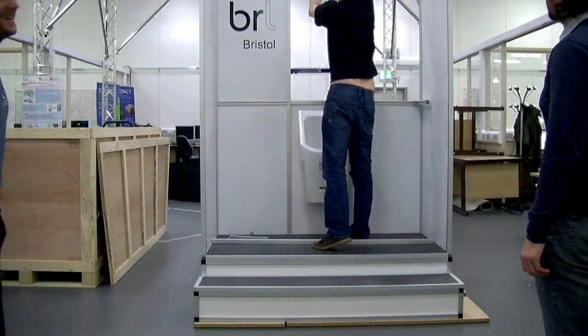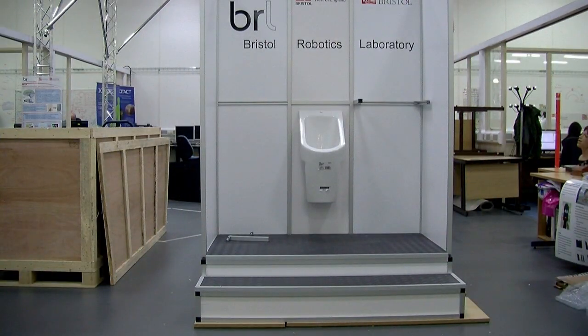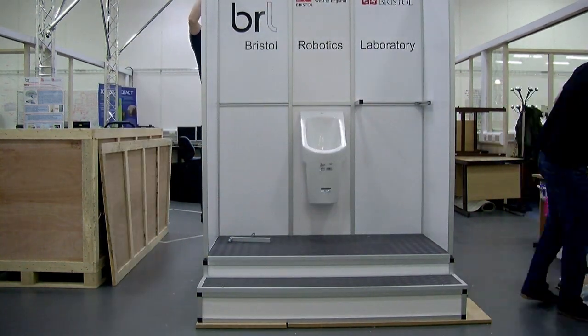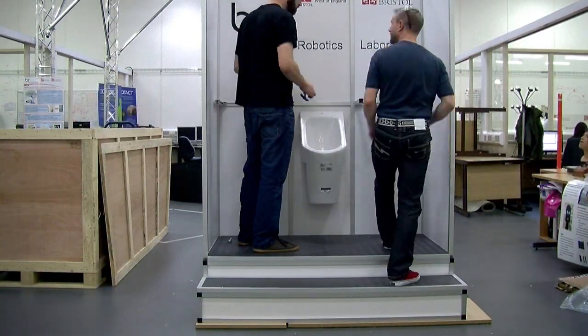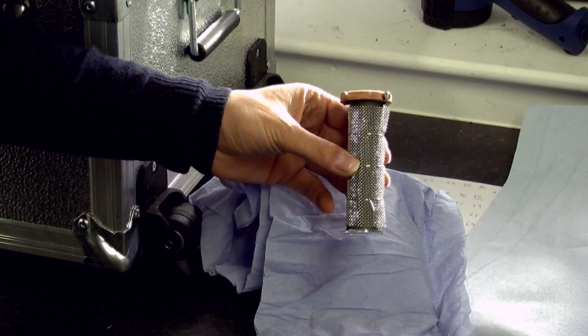The toilet enclosure that we're taking consists of a freestanding urinal which has been donated by one of our partners through the Gates Foundation. It's got its own structure, its own floor and a couple of steps to walk up to it, and the back wall behind it has our own microbial fuel cells put together as a stack.